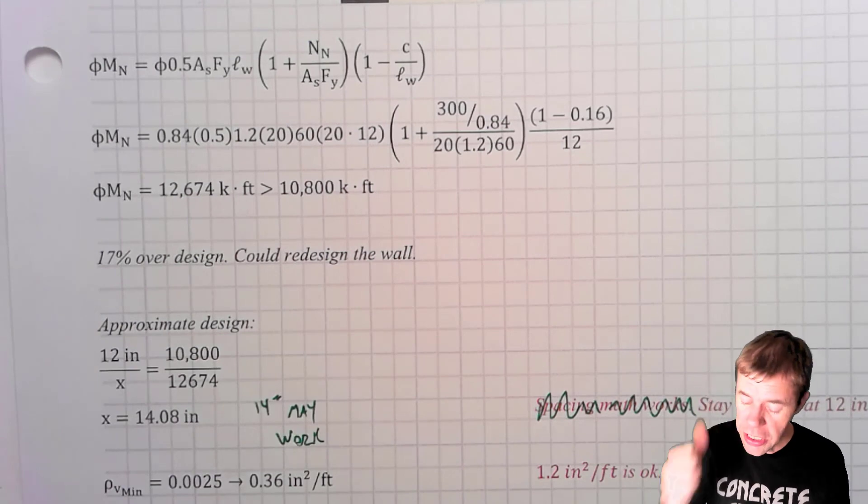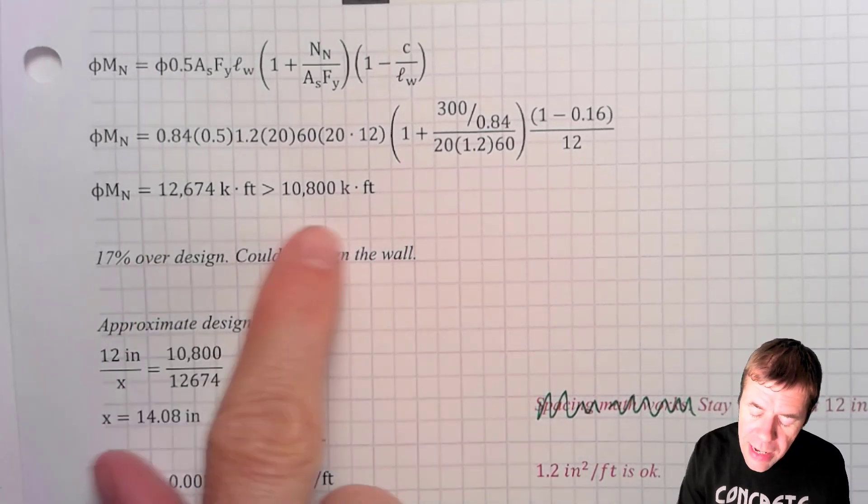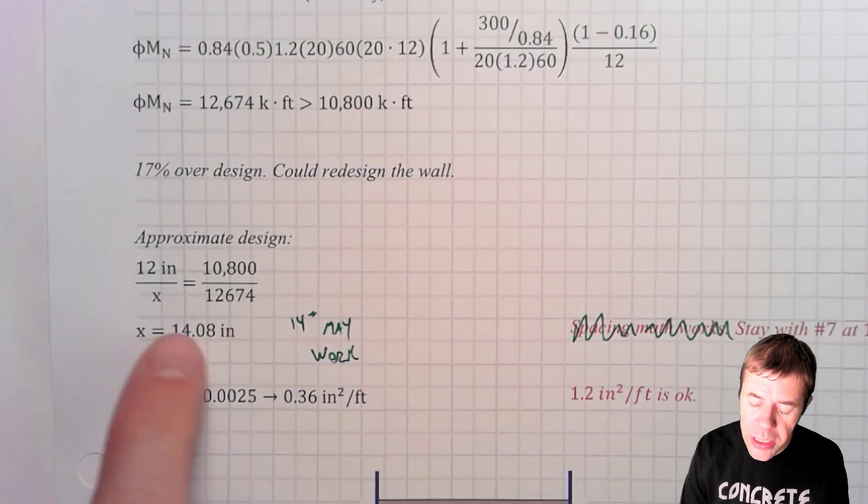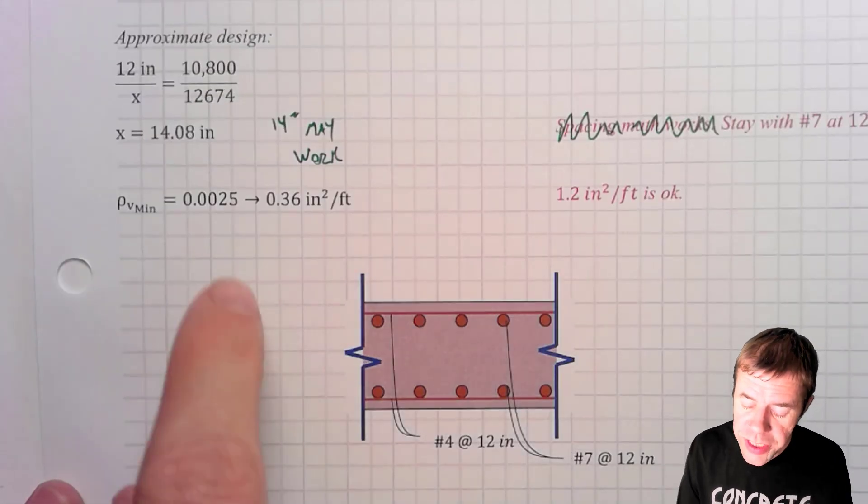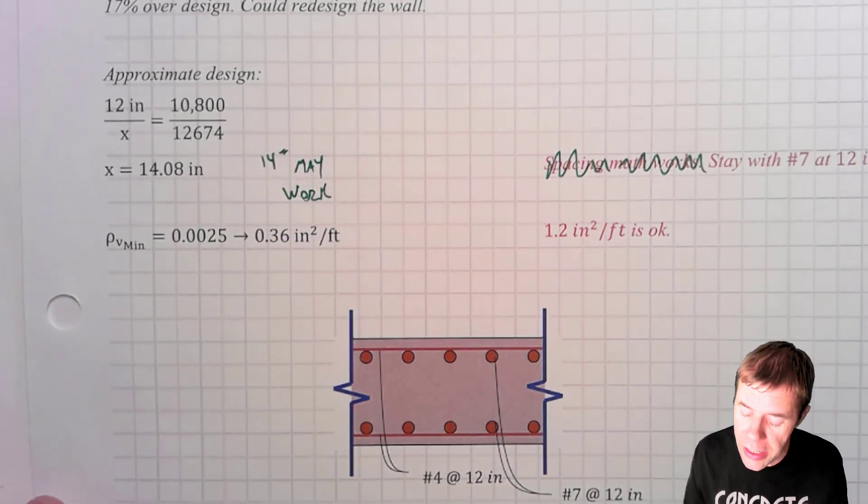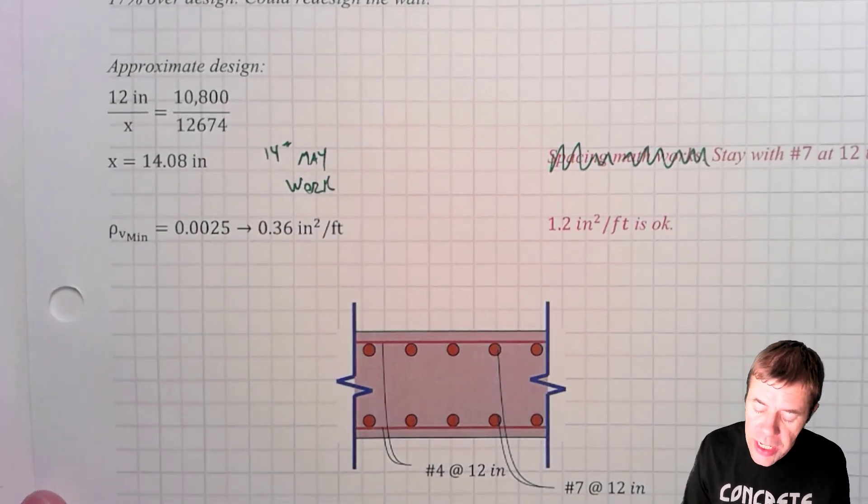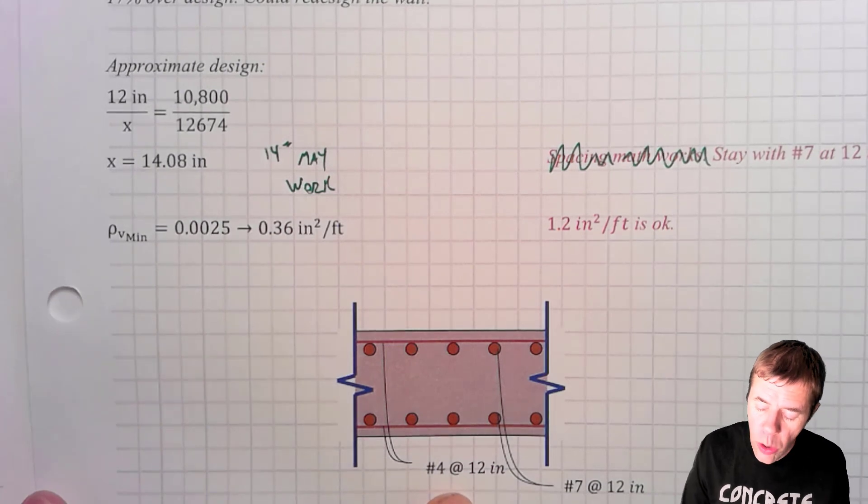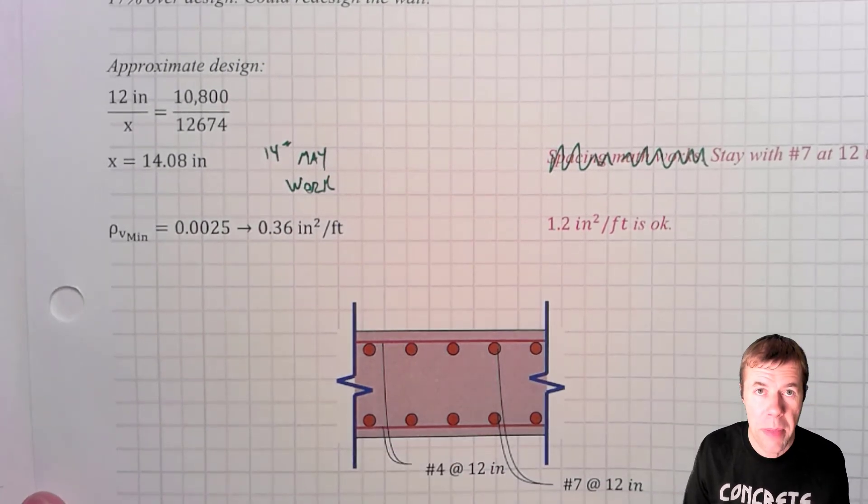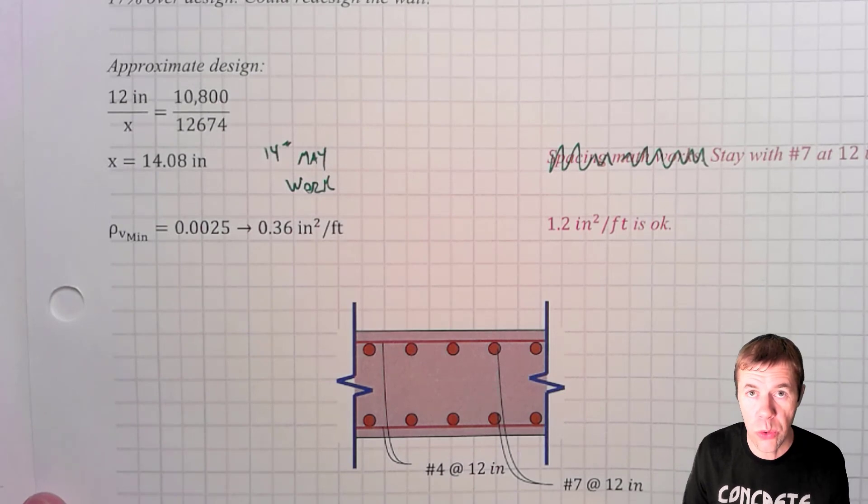Yes! We're good! Now, this is about a 17% over design. If I wanted to, I could try to ratio this down. So 14 inches may work, but I'm not going to use that. I'm going to use 12 inches because that's what I needed for my horizontal steel. And I'm going to use that same spacing for my vertical steel. Makes it kind of easy to lay out.